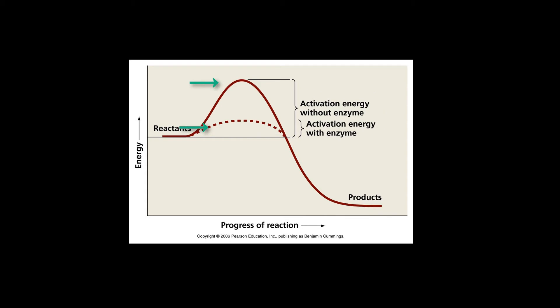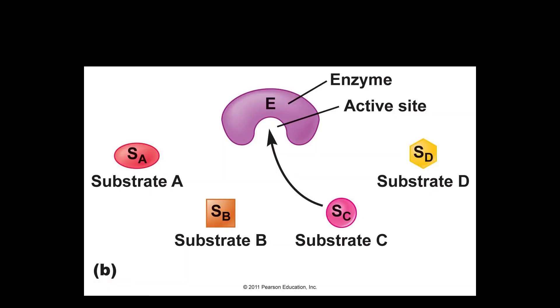Enzymes increase the rate of a chemical reaction by decreasing the activation energy. Enzymes are very specific — they catalyze only one specific chemical reaction. They're not consumed in the process of catalysis. Enzymes catalyze a reaction and then go on to catalyze more of the same chemical reaction. You just can't use them up.